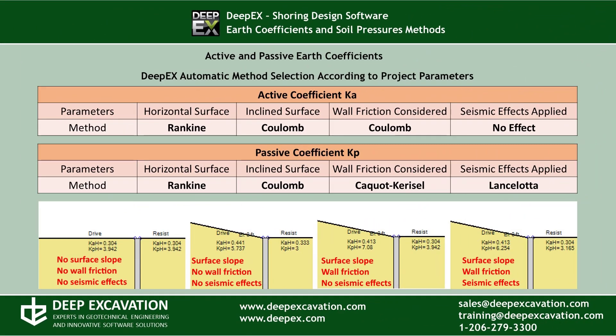In DeepEx we have implemented several methods for the calculation of the active and passive earth coefficients Ka and Kp, such as Rankine, Coulomb, Caquot-Kérisel, and Lancellotta. The software has an automatic procedure and it selects the most suitable method according to the theory. The parameters taken into consideration for the selection of the best method are: if any soil inclination is applied on the model, if any wall friction is considered, and if we have selected to apply seismic effects on the model.